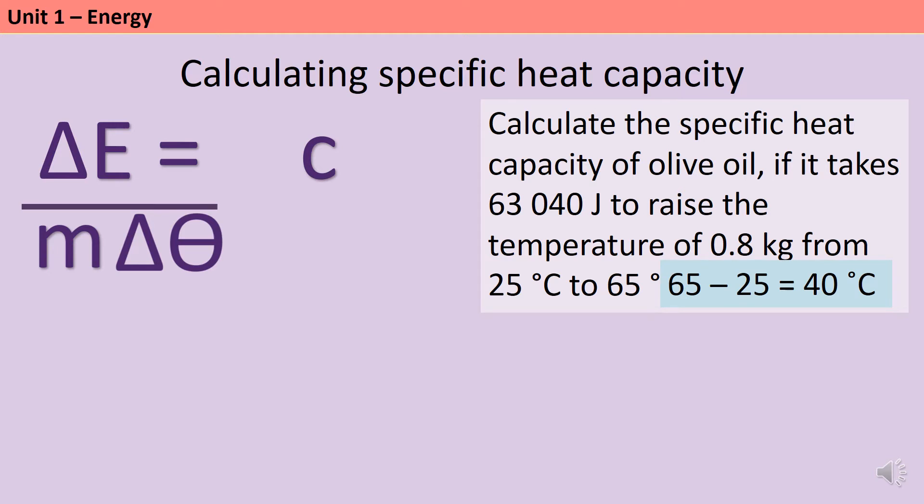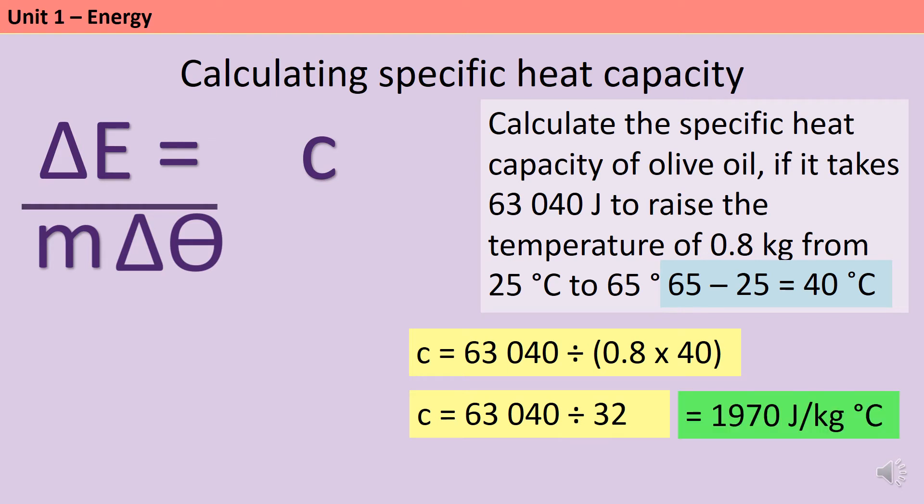Now I can substitute in my values. 63,040 must be the amount of energy because it has a J after it and that J stands for joules. So I'm going to do 63,040 divided by 0.8 times 40, which is 63,040 divided by 32. That gives me an answer of 1,970 joules per kilogram per degree C.